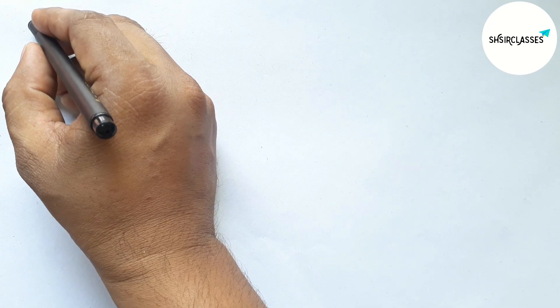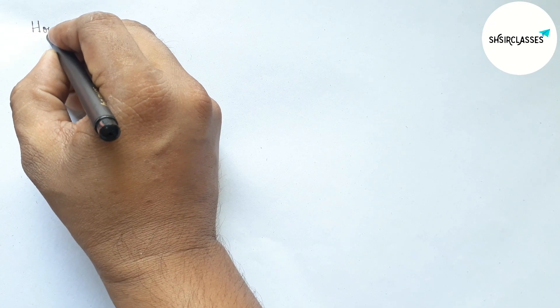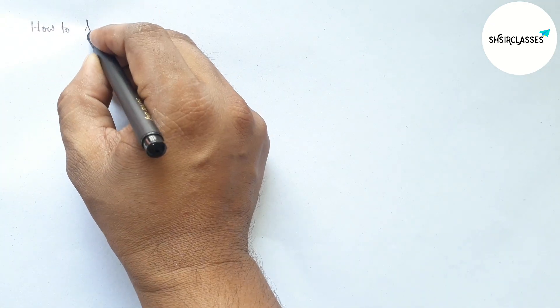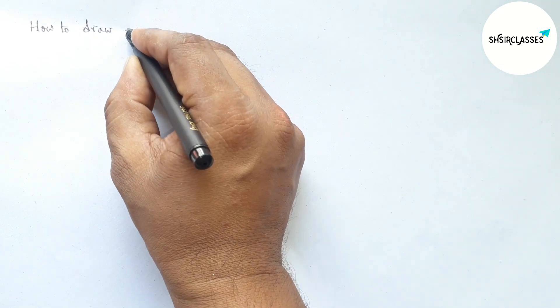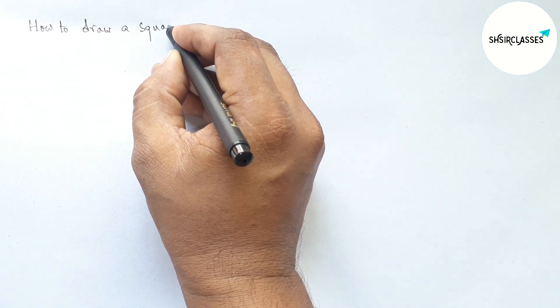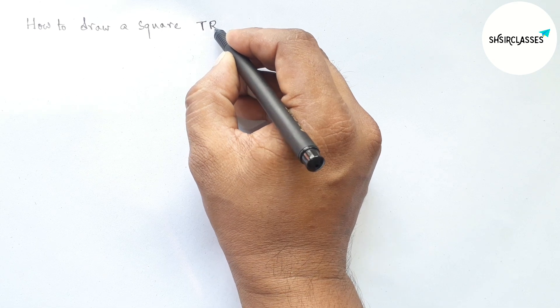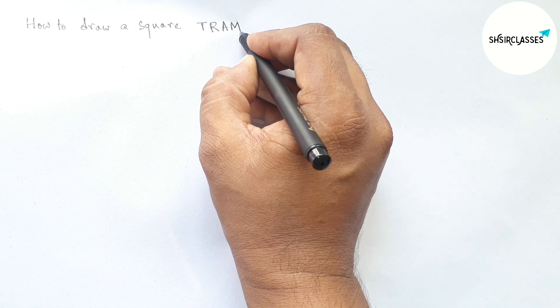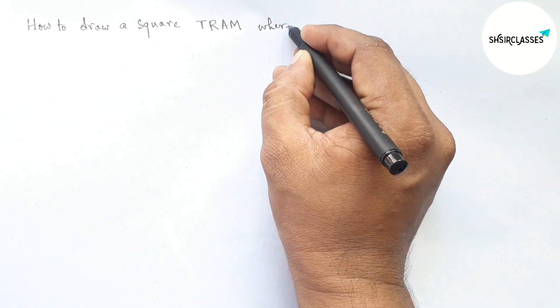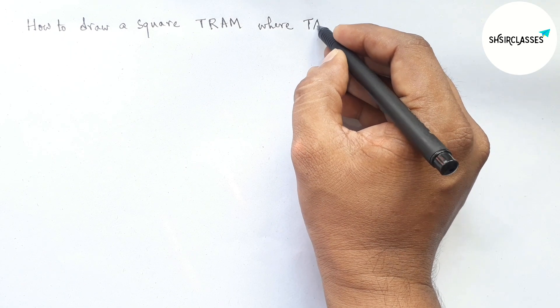Hi everyone, welcome to Essay Share Classes. Today in this video, we'll learn how to draw a square TRAM where TA equals 6 centimeters in an easy way. Please watch the video till the end. Let's start the video.